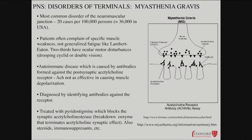Regarding whether IVIG is used for myasthenia — the reason it's used for Guillain-Barré is it's such a life-threatening situation. Myasthenia gravis, in the long run, can be quite debilitating, but you don't have these acute life-threatening issues. And IVIG comes with its own side effects — you can have a reaction to it — but it's definitely worth trying.